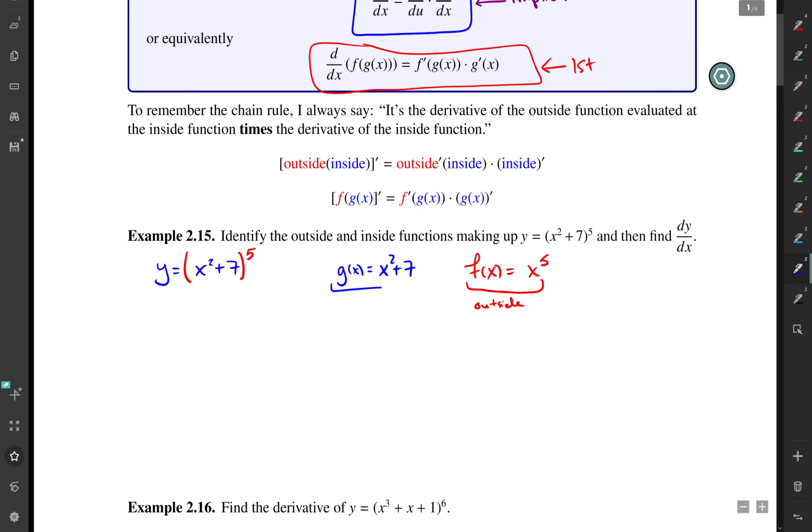Okay, and so what this says is, what the chain rule says, is that the derivative dy/dx of this whole function is going to be the derivative of the outside. So that's 5 times something to the fourth, and then you plug in the inside function. That's just x² + 7, that's g of x.